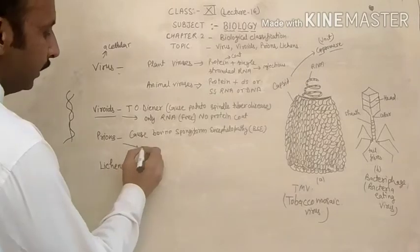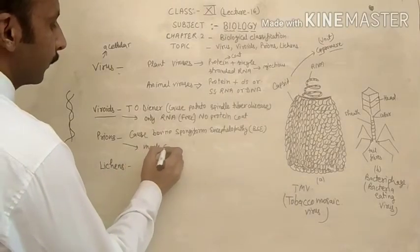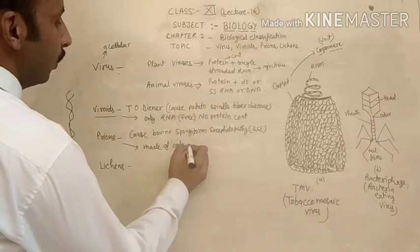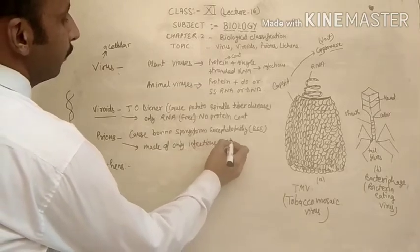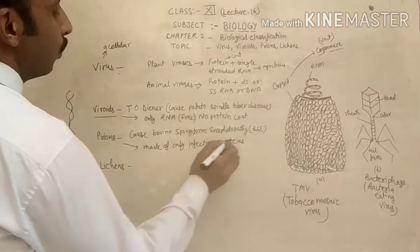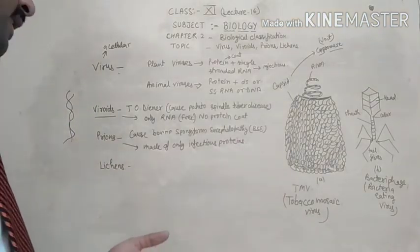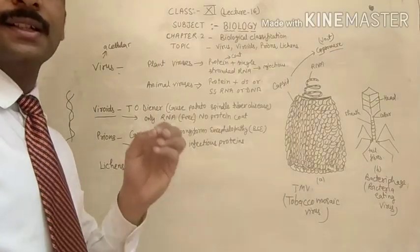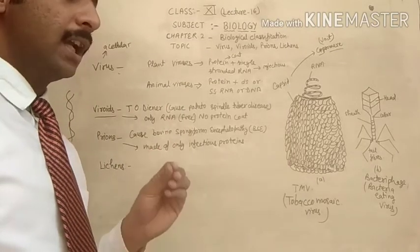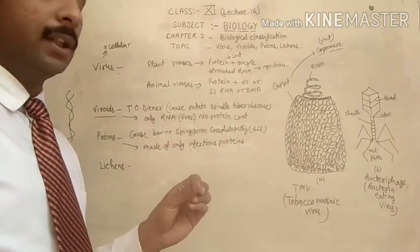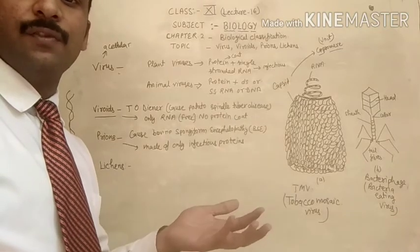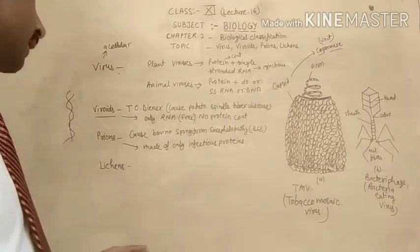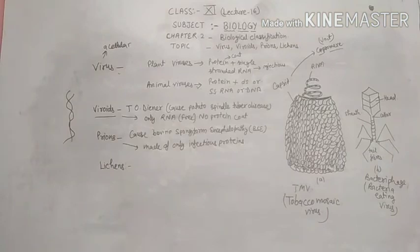Now, prions. Prions are made up of only infectious protein. They are viruses in which only proteins work as the infectious agent. In these types, DNA and RNA are both absent — only the proteinous part works as an infectious agent and causes different diseases. I hope this topic is clear — this is about viruses, viroids, and prions.